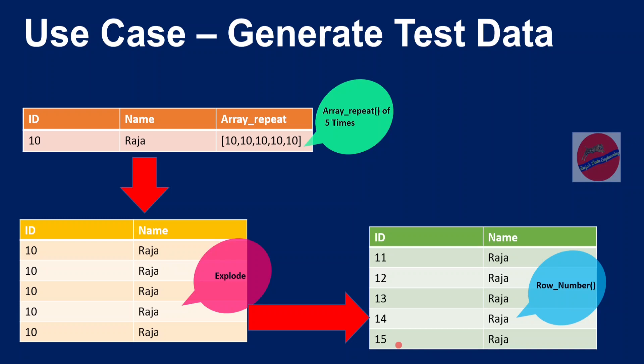So from the original dataframe with id and name, we have created this test data using PySpark functions. In most scenarios we test with a smaller amount of data in development or testing phase, but once moving the solution to production it might pull a huge amount of data. Our solution should be scalable and able to handle huge amounts of data. For performance testing or stress testing, this test data generation is very important.